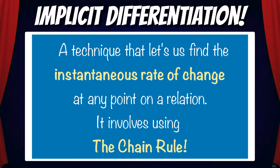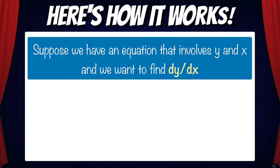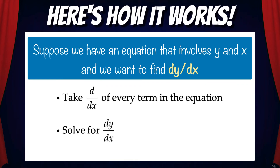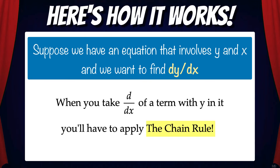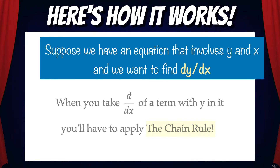Implicit differentiation is a technique that lets us find the instantaneous rate of change at any point on a relation, and it involves using the chain rule. Here's how the technique works: suppose we have an equation that involves y and x, and we want to find dy/dx. What we're going to do is take d/dx of every term in the equation — take the derivative with respect to x — and then we'll solve for dy/dx. When you take d/dx of a term with y in it, you'll have to apply the chain rule.